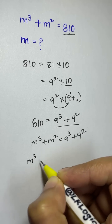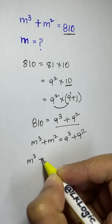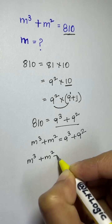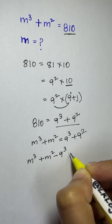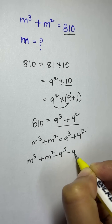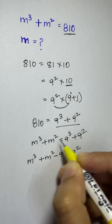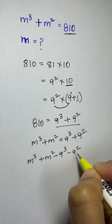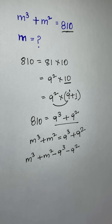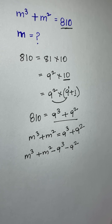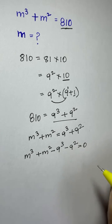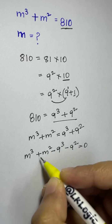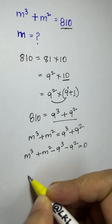Now let's bring all the terms to one side by subtracting. We have m cubed plus m squared minus 9 cubed minus 9 squared equals zero.